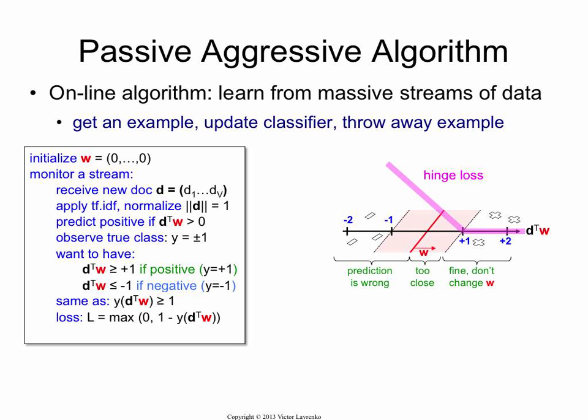But if it's smaller than 1, so if it falls into this too-close range, or if it's on the other side of the decision boundary, then you want to penalize it. You penalize it by how far off it was. You want it to be at plus 1, and it was at d transpose w. So you take that, the difference between them, as the penalty.